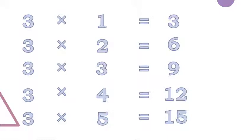Let's revise it till here only. Three ones are three, three twos are six, three threes are nine, three fours are twelve, three fives are fifteen. Let's move forward.